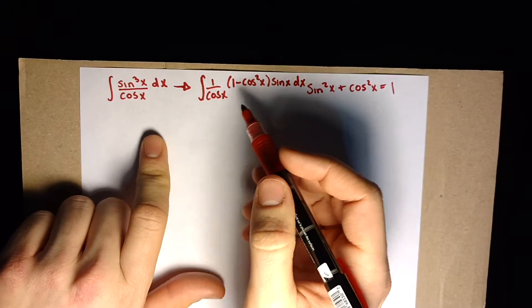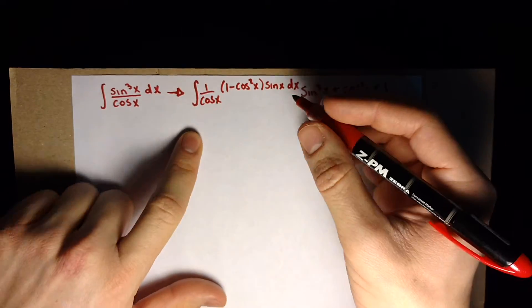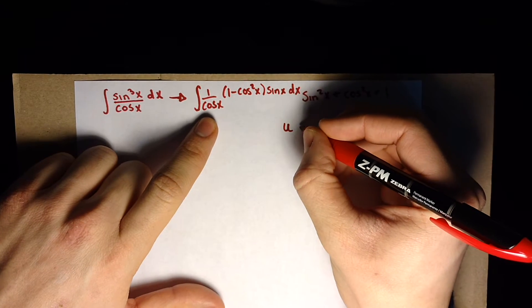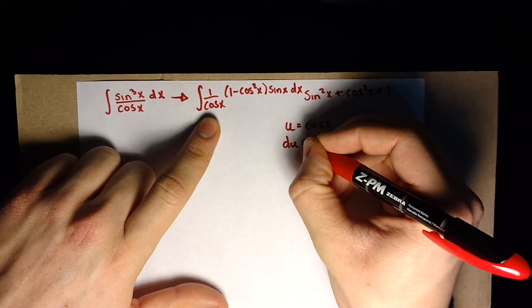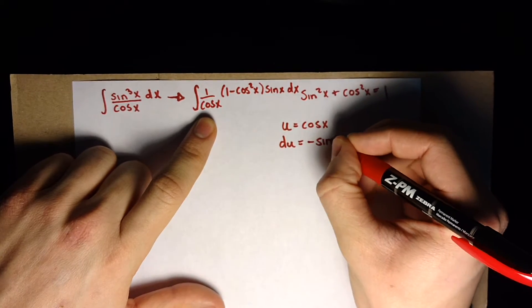Alright, so now what we're going to do is let u equal cosine of x. So du equals negative sine of x dx.